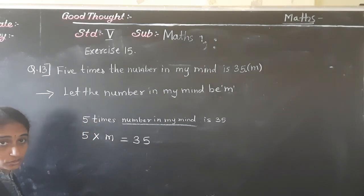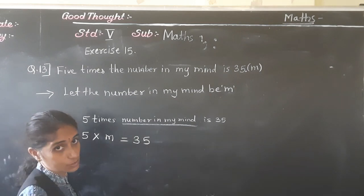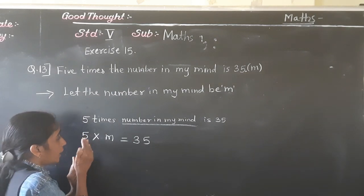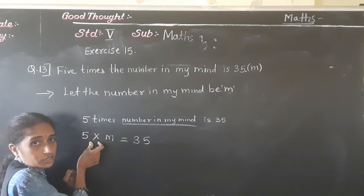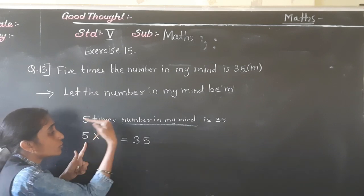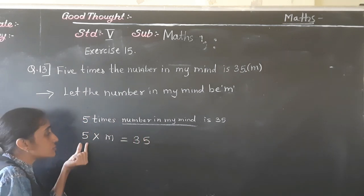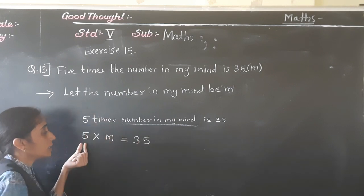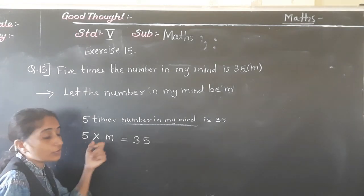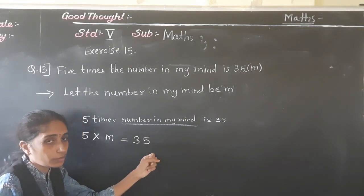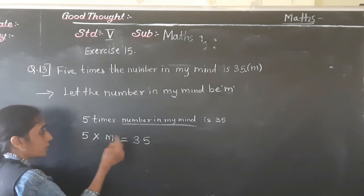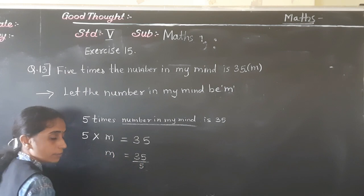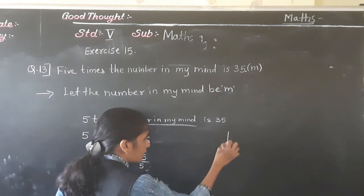Now let's solve this equation. You have learnt transposition. When we solve this equation, 5 is on the left hand side. If I want to transfer 5 to the right hand side — 5 is multiplied here — so if we transfer it to the right hand side, then it will become division. So n = 35 divided by 5.